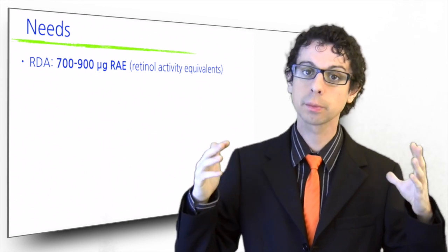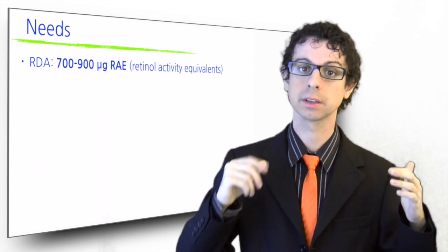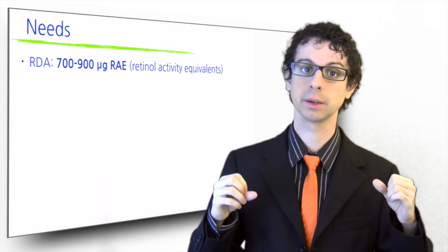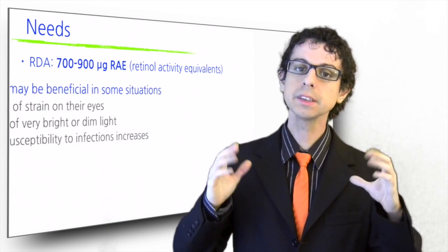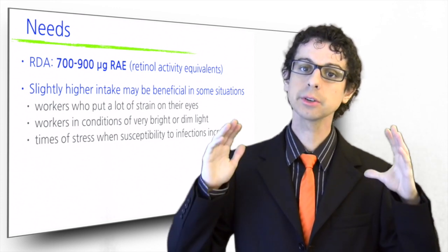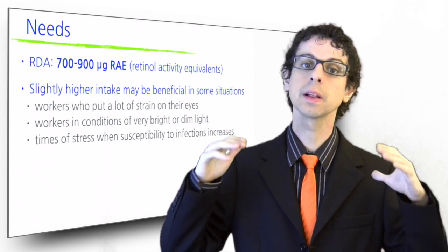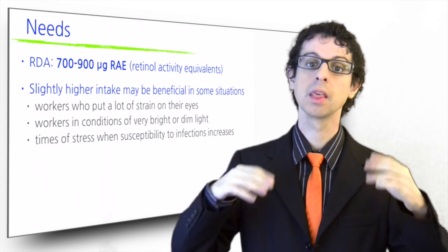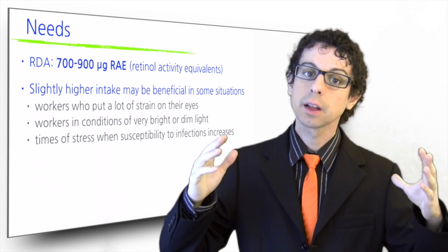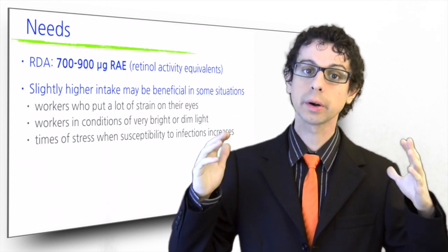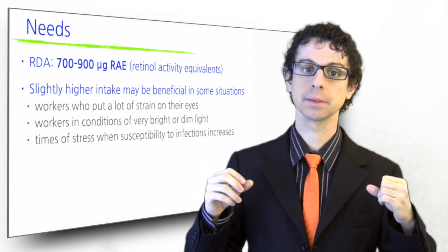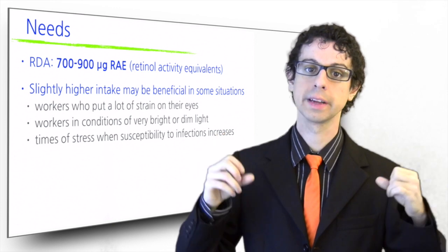For example, 1 microgram of preformed retinol counts as 1 retinol activity equivalent, while 1 microgram of beta-carotene counts as 0.1 retinol activity equivalent. In some situations, however, a slightly higher vitamin A intake may be beneficial. And in particular for those individuals who put a lot of strain on their eyes because of their work. Those individuals staring at the computer screen for many hours every day, reading a lot of documents, sewing, as well as those who work in conditions of very bright light, such as out in the sunlight, or under fluorescent light, or exposed to snow glare or water glare.